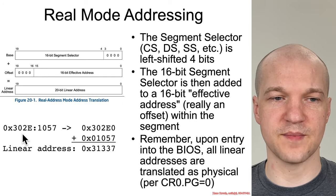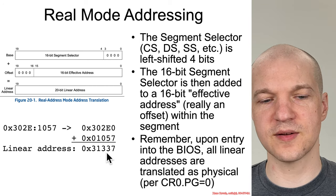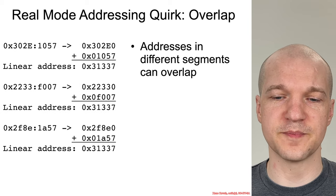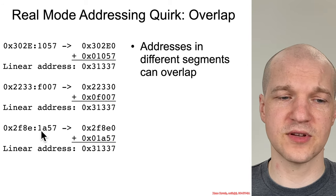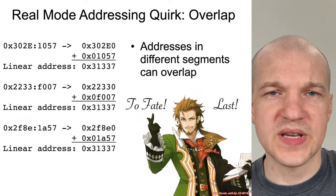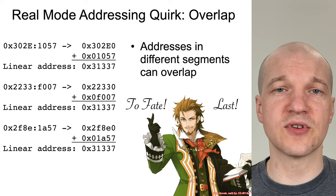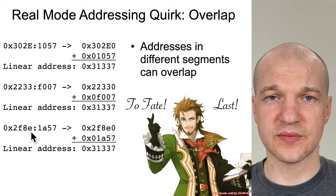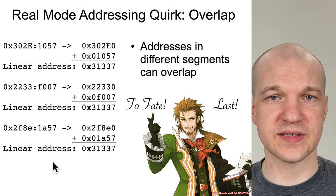For instance, if you had a segment selector of 302E and a linear address offset of 1057, you add those together and you get 31337. But there are different ways that you can yield 31337 — you could use 2233 with a different offset, or other combinations, all yielding 31337. This is a bit of a quirk, and it means that memory management within this sort of regime was a little confusing, because you never necessarily knew without doing the actual math what linear address you were going to deal with. So that was ultimately the responsibility of BIOSes and operating systems — these being old operating systems like DOS — to manage the segments in a way that made sense to them.